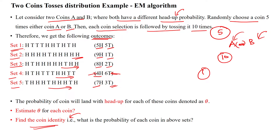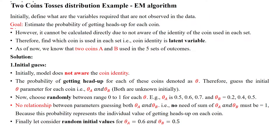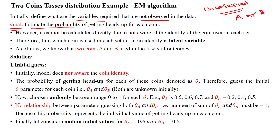The problem is: what is the probability of getting coin A or B? We have to identify the coin. The probability of getting heads when tossing is denoted as theta. The goal is to estimate the probability of getting heads when tossing each coin. The variables not observed in the data are latent variables. Here, the unobserved latent variable is which coin is selected — A or B. We have the outcomes, and from that we calculate the coin selected using Bayes' theorem.